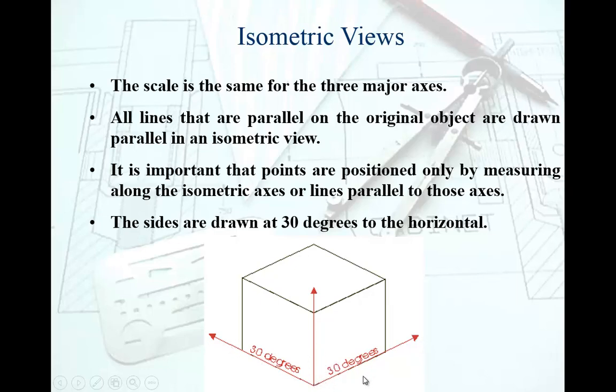In fact they are at 30 degrees to the horizontal. If I were to draw a horizontal line here, this angle here is 30 degrees and this isometric axis is making 30 degrees with the horizontal on this side.